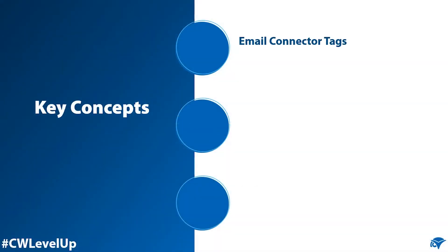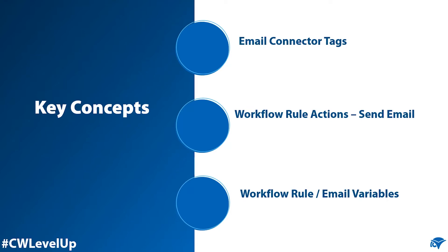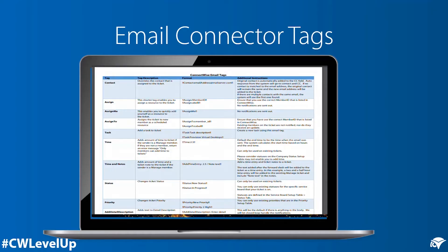In ConnectWise Manage, the key concepts are email connector tags, which enable you to quickly create and or update existing tickets by issuing commands via an inbound email connector. Workflow rules, running on any of the records, have the send email action. When sending an email as a workflow rule action, several variables are available. Using these together allows you to create or update tickets off a workflow rule with information from the original record and without the need for the more rigid ticket templates.